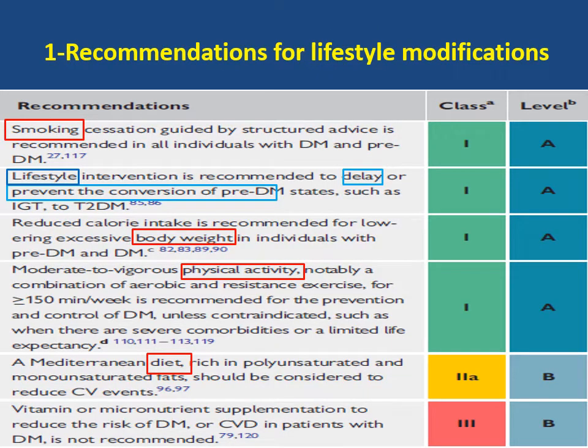The recommendations for lifestyle modifications include diet, exercise, weight reduction, and smoking cessation. The diet recommended is the Mediterranean diet, which is rich in polyunsaturated and monounsaturated fat. Exercise should be at least 150 minutes per week. Weight reduction and smoking cessation are recommended as a class 1 indication.